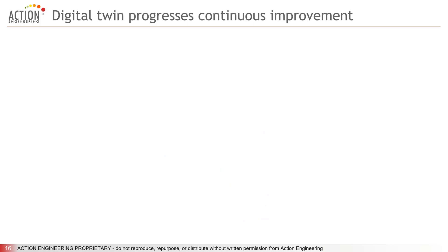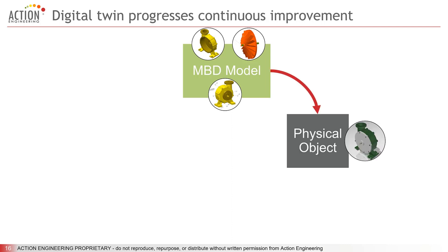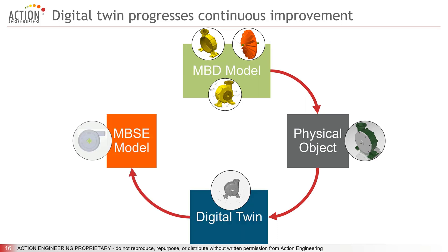Even if the digital twin is new to you, you already have feedback loops in place to support your continuous improvement. Some of those feedback loops are the AIAG APQP process, Lean Six Sigma, DMAIC processes, the Deming circle of plan, do, check, act, and closed-loop manufacturing. Those are all still in place, and you may find ways to use digital twin data to bolster those analysis and feedback loops.